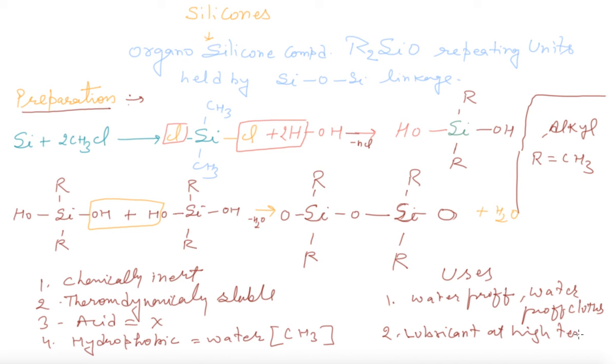And my dear students, one more thing. Whenever you are purchasing a water bottle from the market, in that water bottle one small pouch is there. That is silicon compounds. They are removing the moisture from the bottle and the bottle gets fresh. Silicones are also used in this way. And next compound is silicates.